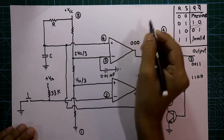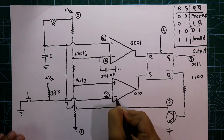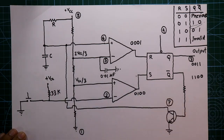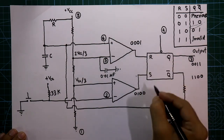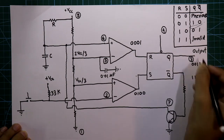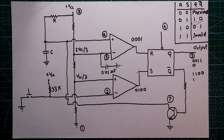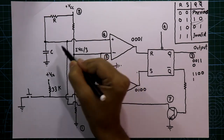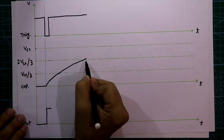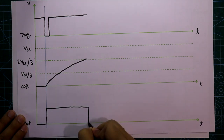When the capacitor voltage rises just above 2Vcc/3, the upper comparator's non-inverting input now exceeds 2Vcc/3 at its inverting input, so its output flips to one. Meanwhile, the lower comparator still has Vcc/3 at its non-inverting input and Vcc at its inverting input, so its output remains zero. This gives R=1, S=0: Q becomes zero and Q-bar becomes one. The output therefore drops to zero.